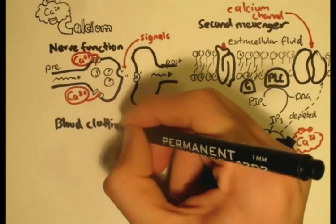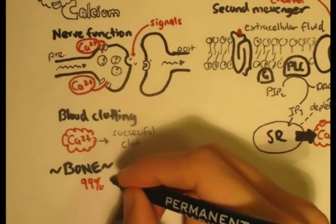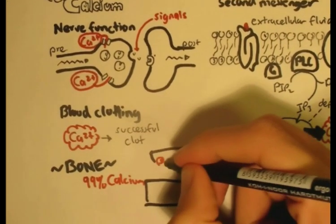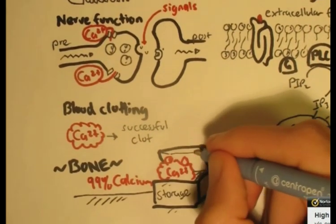Calcium is also important for a successful blood clot. Calcium is an important part of bone because 99% of the whole calcium found in the body is stored in the bone.